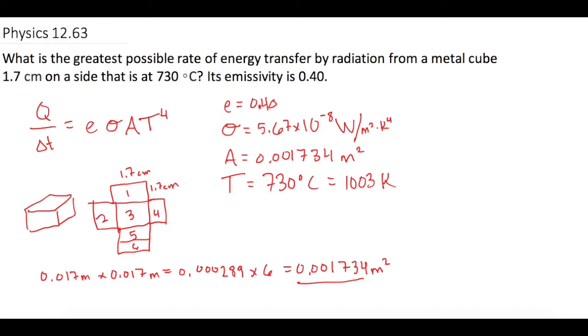Okay, so now we can plug it in. So we have Q over delta T equals 0.4 times the Stefan-Boltzmann constant is 5.67 times 10 to the negative 8.